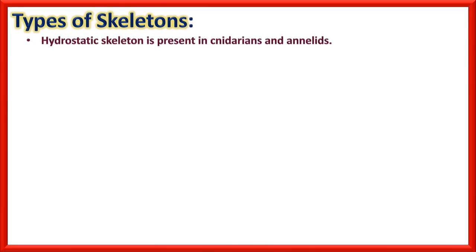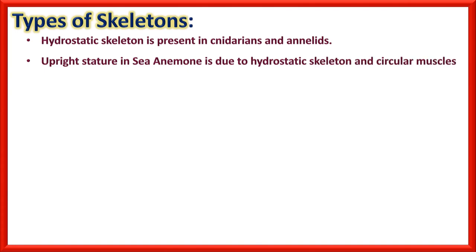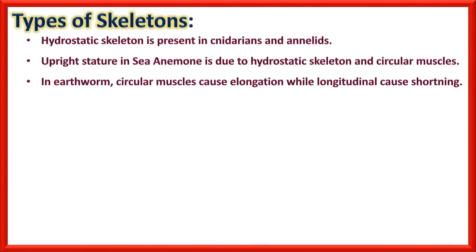Types of skeleton: Hydrostatic skeleton is present in cnidarians and annelids. The upright posture in sea anemone is due to the hydrostatic skeleton; if water is removed that upright posture will fall. In earthworm, circular muscles cause elongation while longitudinal muscles cause shortening. Exoskeleton is inert and non-living.